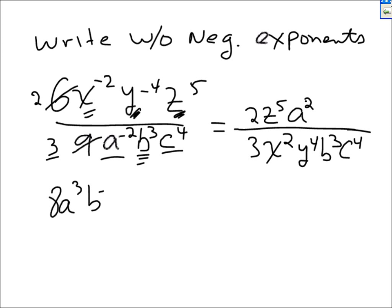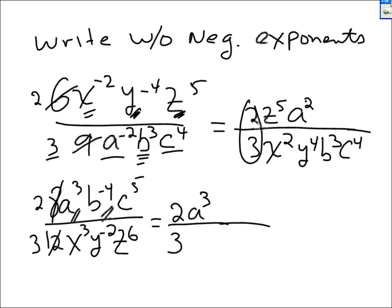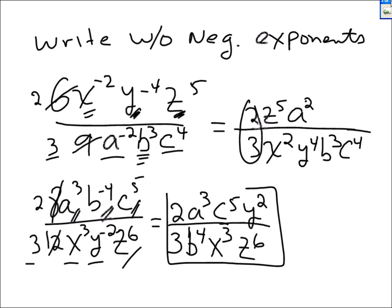New problem. z to the 5th on top, divided by 12. 4 goes into both numbers — 2 and 3 times — giving 2 over 3. a to the negative 3 stays where it is. b to the negative 4 has a negative exponent — we move it. c to the 5 stays where it is. x cubed stays where it is. y to the negative 2 gets moved to the top as y squared. The v to the 6 stays where it is. And there is the answer.